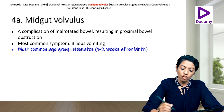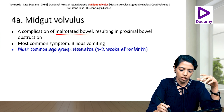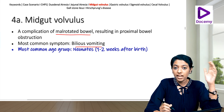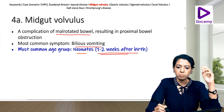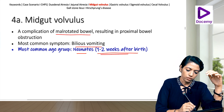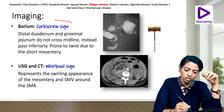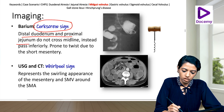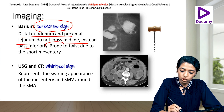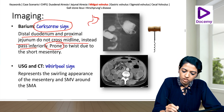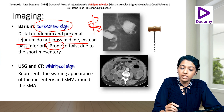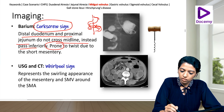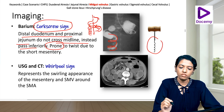Midgut volvulus is a complication of malrotated bowel resulting in proximal bowel obstruction, most commonly in neonates one to two weeks after birth. On barium, the classic corkscrew sign is seen — the distal duodenum and proximal jejunum do not cross the midline as normal but pass inferiorly, forming the corkscrew pattern.